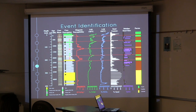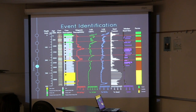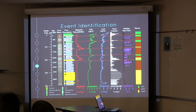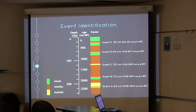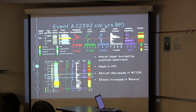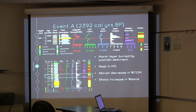We believe these submergence events correspond to co-seismic subsidence. The red lines going horizontally are our proposed subsidence events. These all occur in the upper 250 centimeters of our core. Our oldest event is Event A at 213 centimeters, and our youngest event is Event E at 25 centimeters. We will look at the specific events in detail, with the red line again representing the proposed event contact.